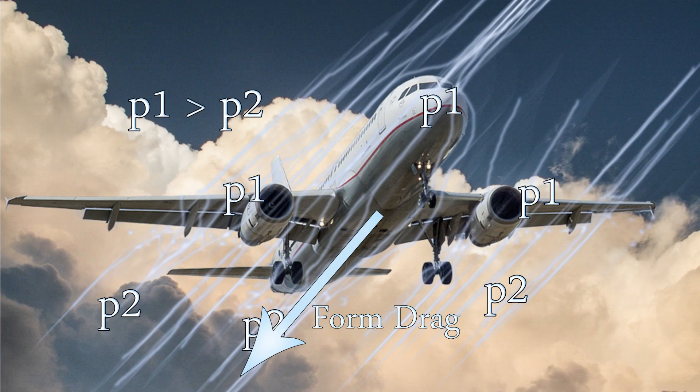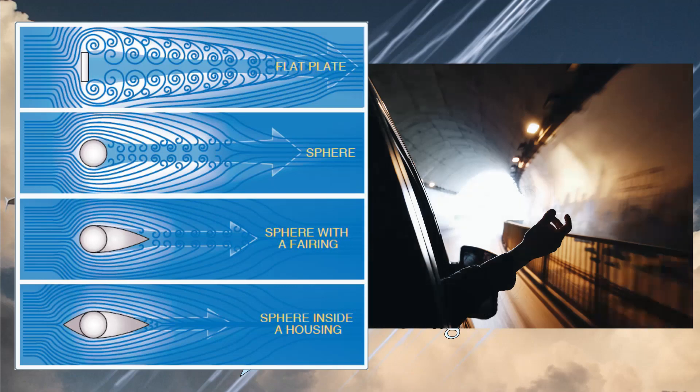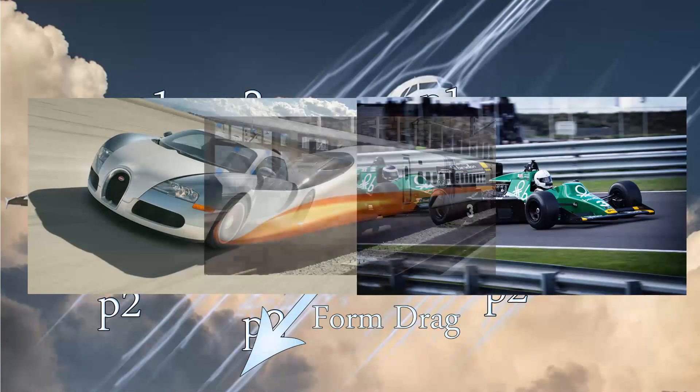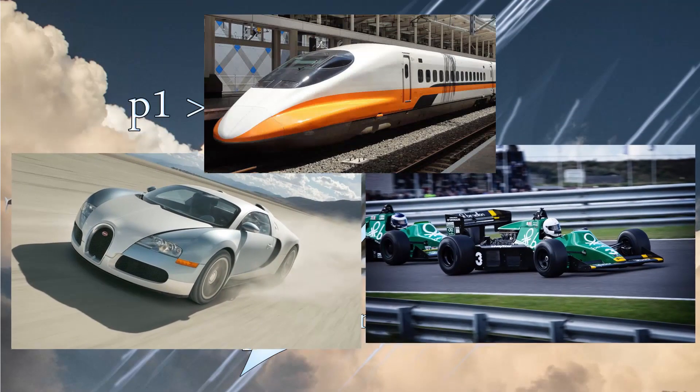This drag is greatly dependent on the shape of an object and is the type of drag that you can feel when you stick your hand out of the moving car's window. The greater the frontal surface is, the greater the drag it produces. This is why fast-moving objects are streamlined, designed to minimize the movement of the air around them and thus reducing the form drag.